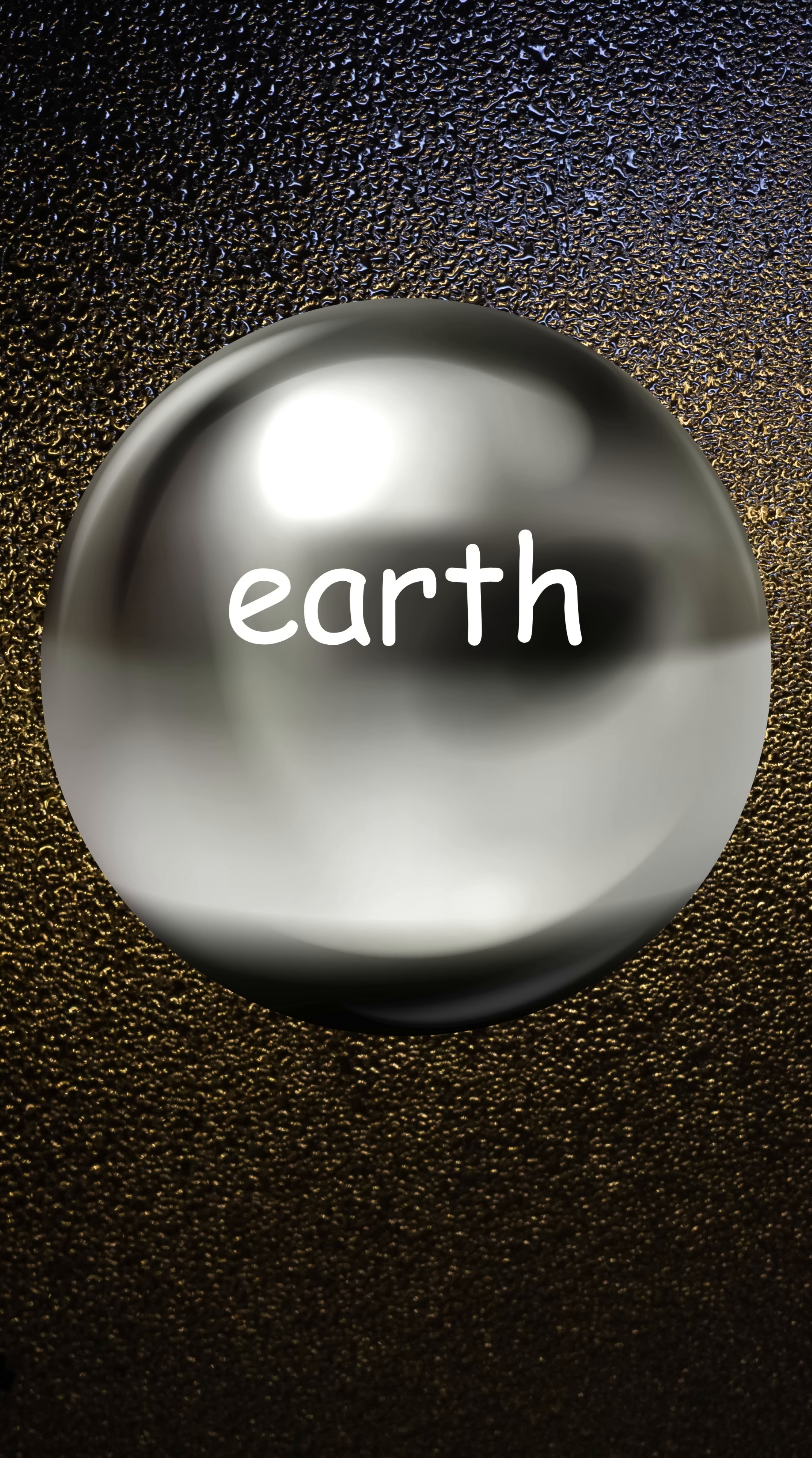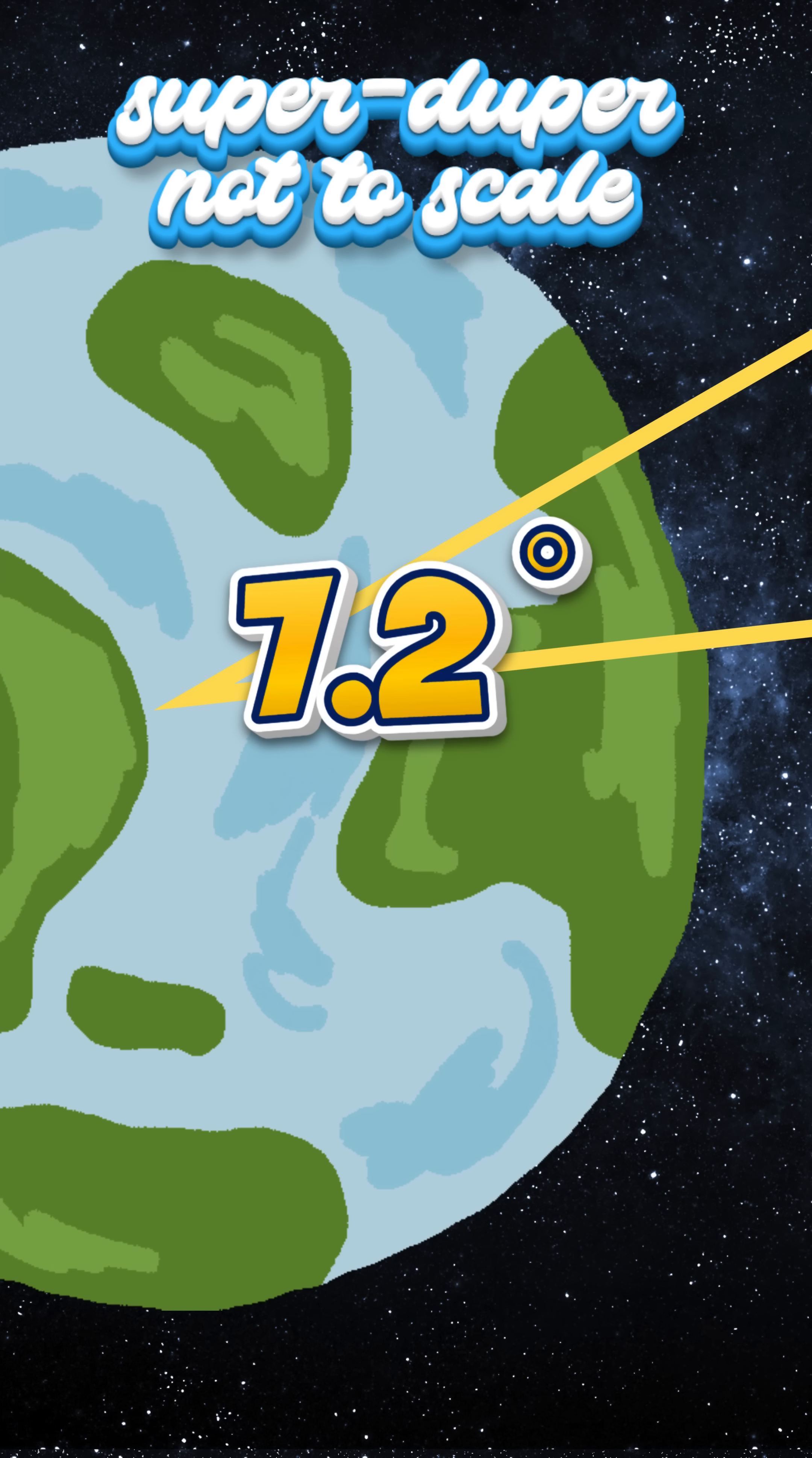Because the Earth is a sphere, that 7.2 degree shadow angle was the exact same angle separating the two cities at the center of the Earth.